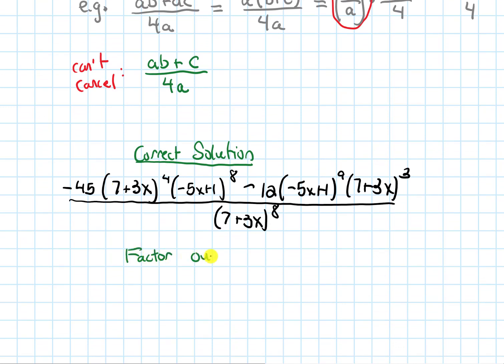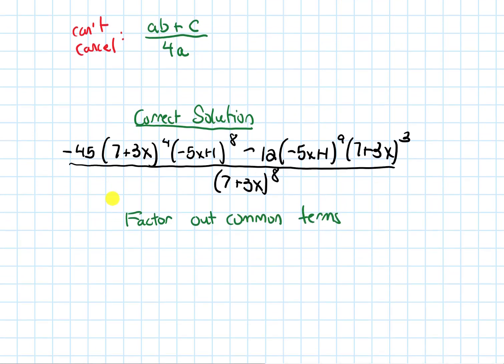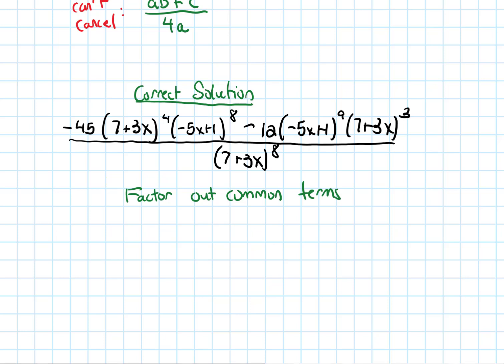So we will factor out common terms. So I notice that, for example, there's a 7+3x term here, and there's another one there. So I'm going to be able to factor out some of those. So I can factor out 7+3x to the whatever the smaller power is. So there's four of those 7+3x terms here. There's three of them here, so I can definitely factor out three of them. That's the smaller power.